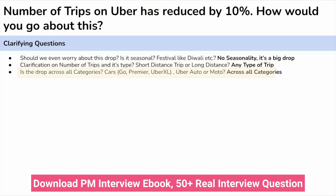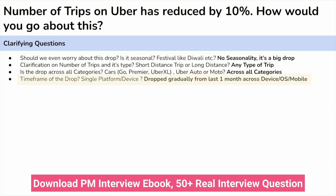The third question which we should ask is about the categories. Is this drop across all types of categories available or some specific type, like Uber Go, Uber Excel, Moto, Auto? This drop is across all types of categories. The fourth question we should ask is about the timeframe and the nature of the drop. The drop is gradual from the last one month and it is across all types of devices, be it Android or iOS.